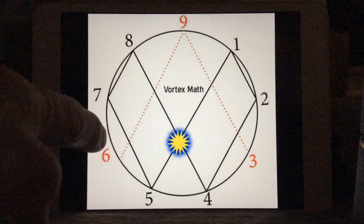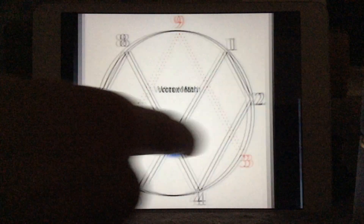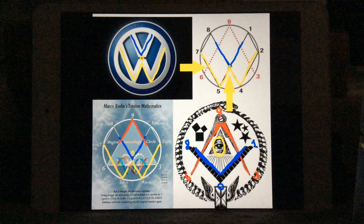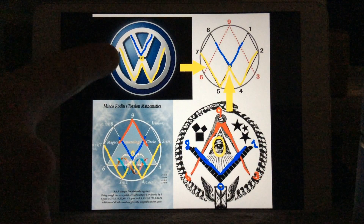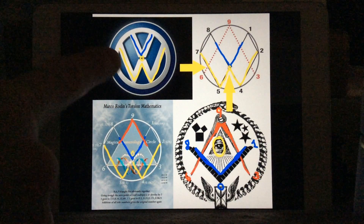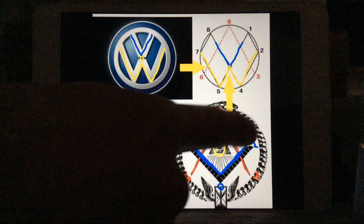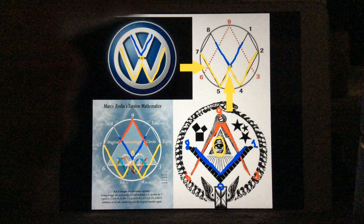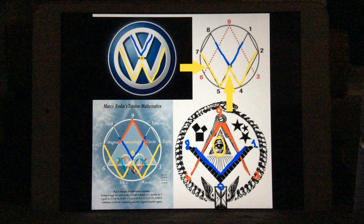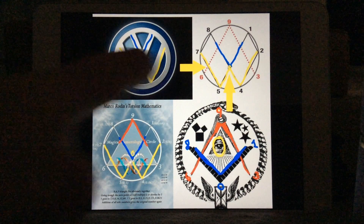What's interesting about that — we leave out the 3, 6, and 9, which gives us our symbolism, which we see clearly written out in Volkswagen. And then in the red and the blue on the top part, we get the Freemason symbol right over the top.